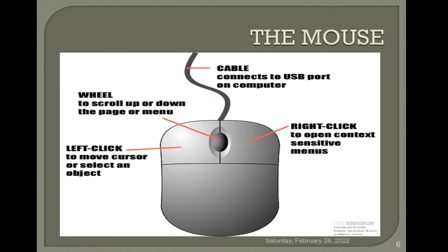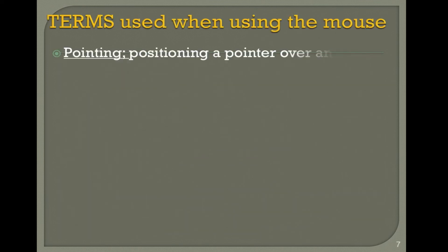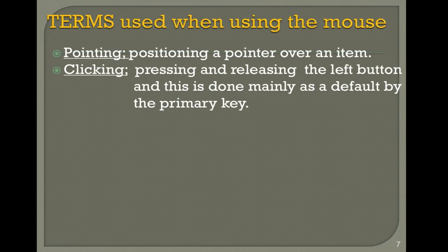As you can see on the screen, you have the mouse, which I believe you've been interacting with. When you look at the mouse, we have three parts: the wheel, which scrolls up and down; the right button, which you click if you want to get other options; and the primary button, which is the left key. When I say 'click,' it is the primary key — the left button. Some of these questions can also be asked in Paper One.